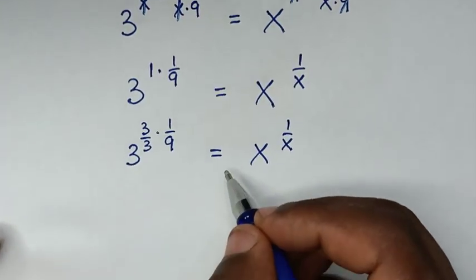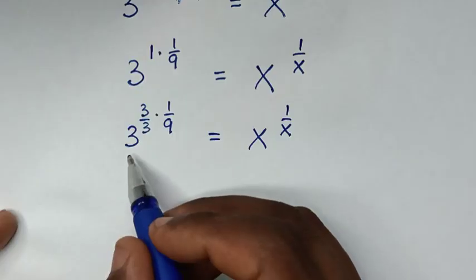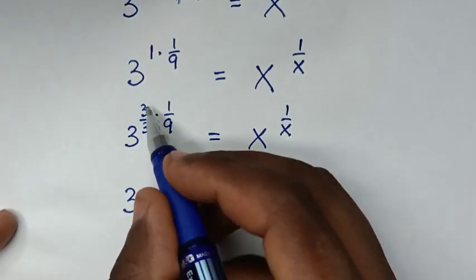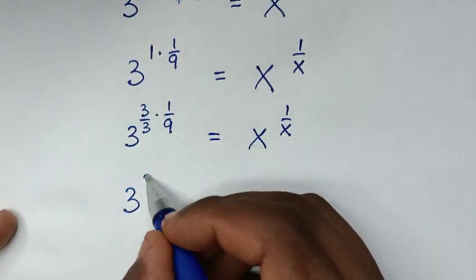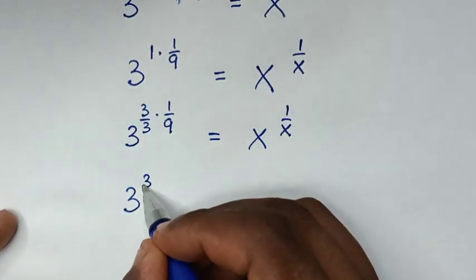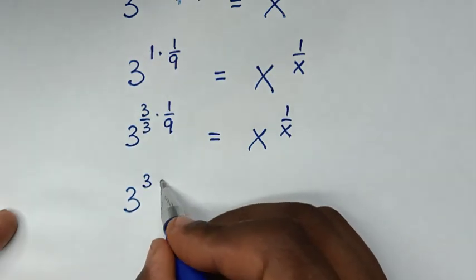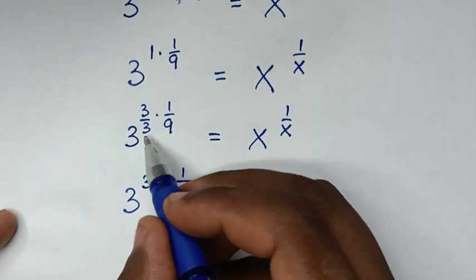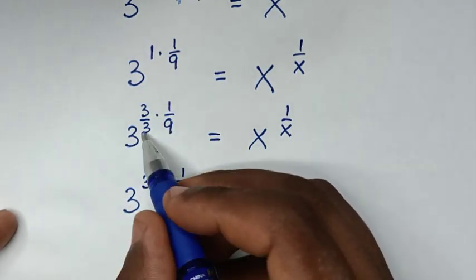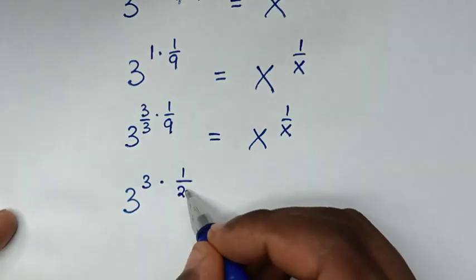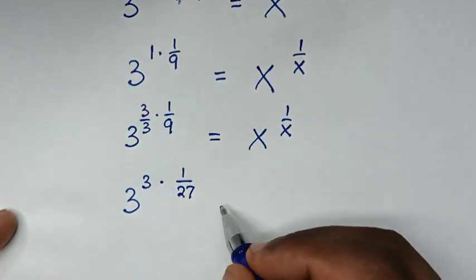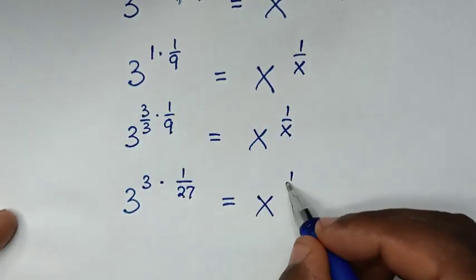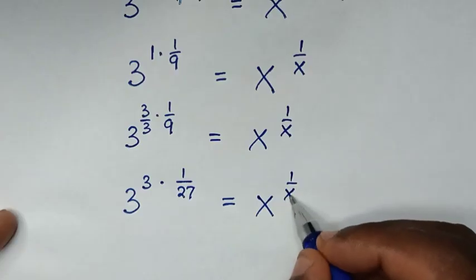In the next step, it will be 3 to the power of 3, then times 1 over the denominator of 3 times 9, which is 27. This gives us 3 to the power of 1 over 27, equal to x to the power of 1 over x.